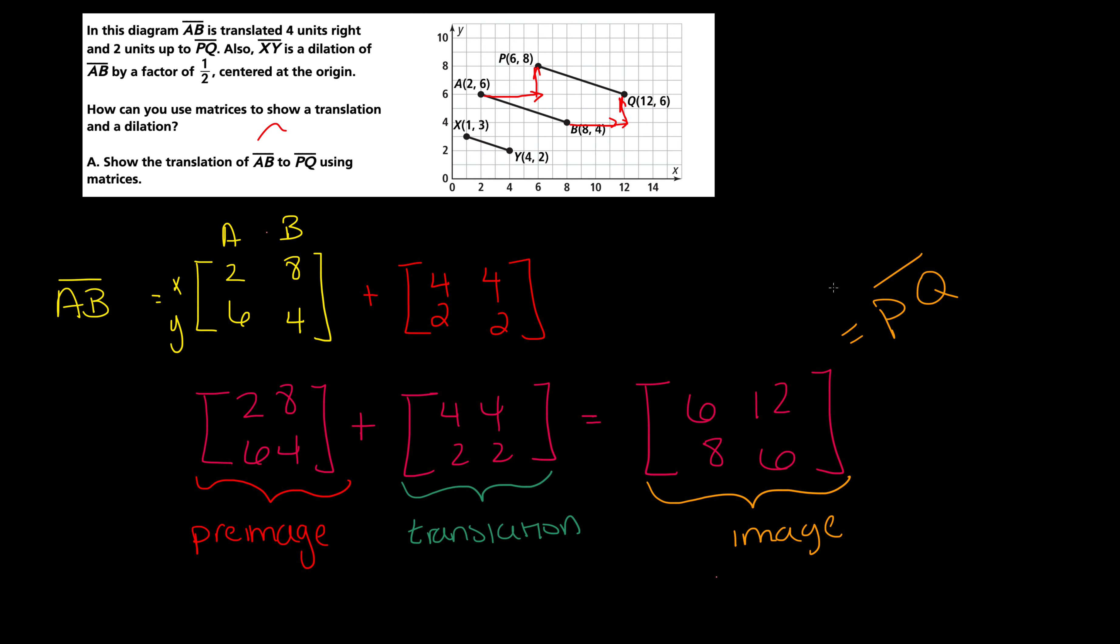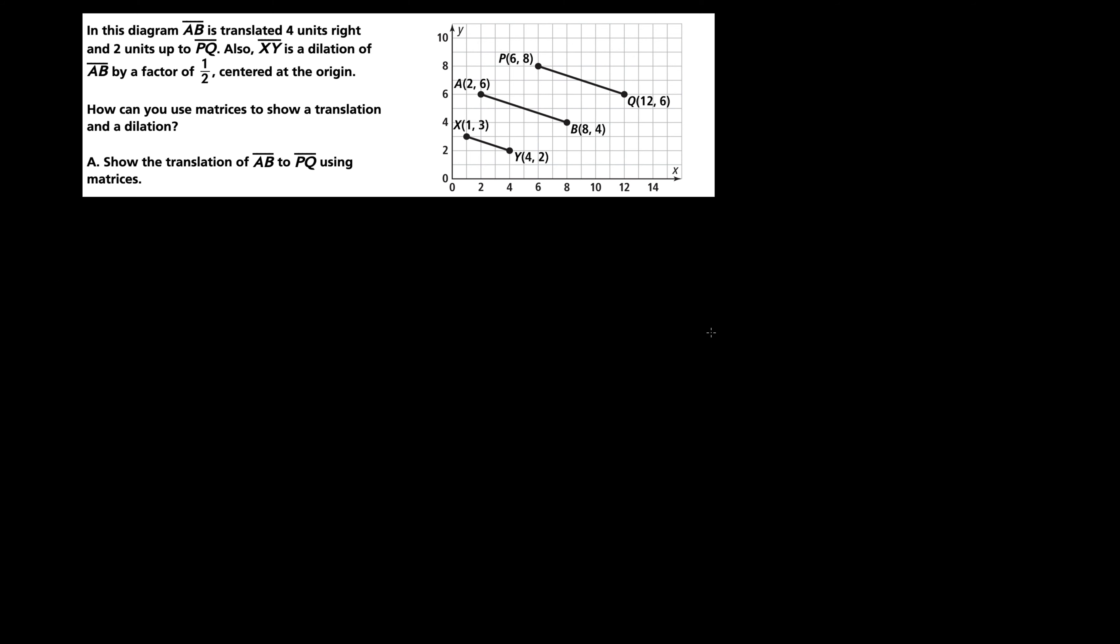That's how we can show translation of our function or our matrices. Nothing too in-depth, nothing too difficult. We're still just working with matrices, we're still just working with points, but now we're just using the matrices to organize these points. This is point A, x value, y value. This is point B, x value, y value. This is what we translated for the x's and the y's. We both translated both x's by 4, both y's by 2. This is an even move. And then we get the PQ, we get that translation.